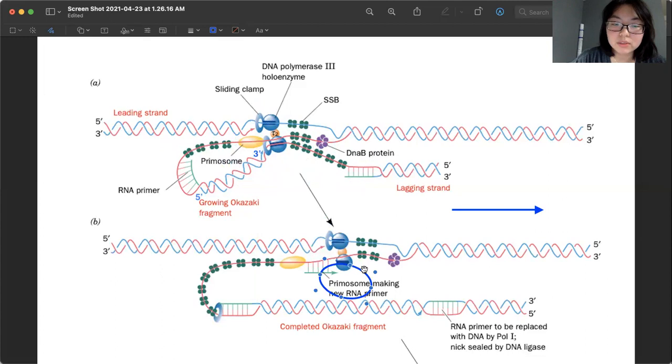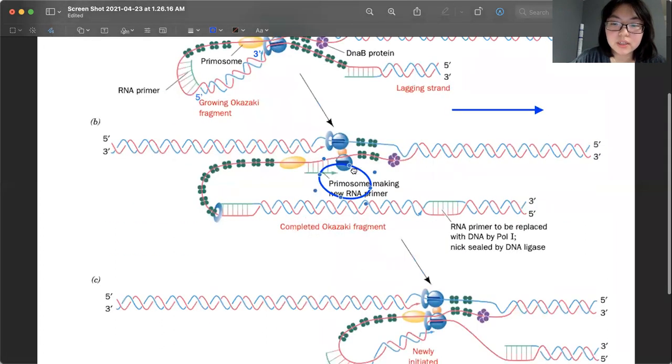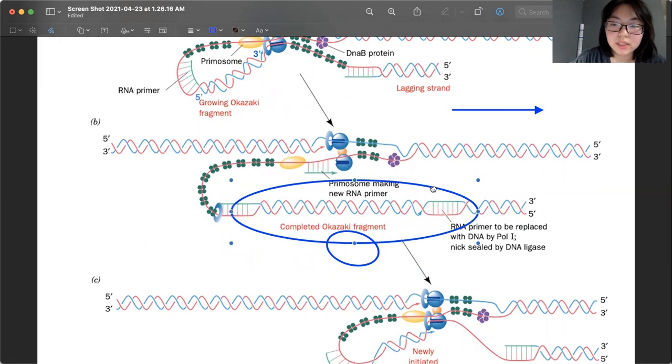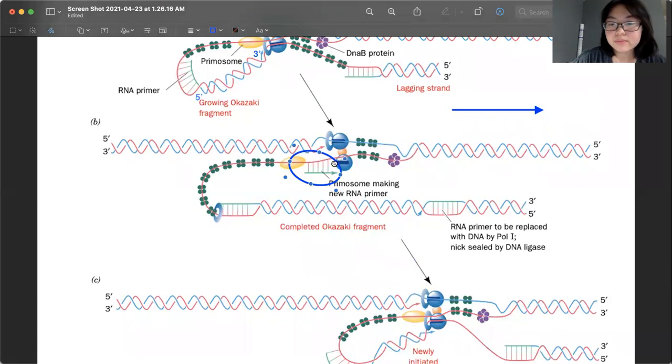And so we move to figure B. So now this new completed Okazaki fragment will be let go, right? And the primosome will have already made a new RNA primer. And that is where the DNA polymerase jumps to.